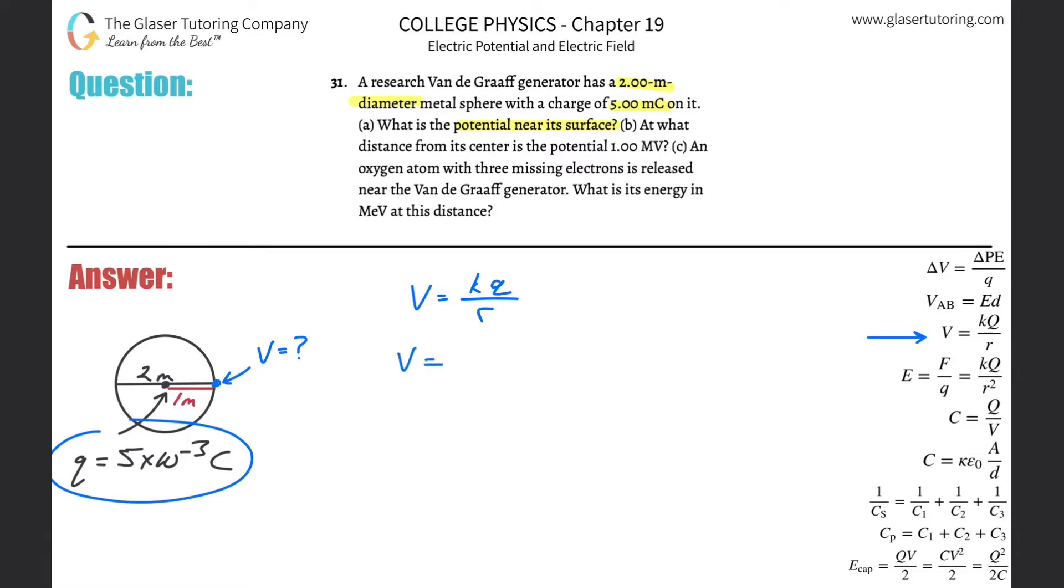So plug it on in. k is going to be 9 times 10 to the 9th, q is going to be 5 times 10 to the minus 3, and the r value here, which is the distance, is going to be 1 meter. So we're basically going to get 9 times 10 to the 9 times 5 times 10 to the minus 3, which works out to be about 4.5 times 10 to the 7th volts. That takes care of letter A.